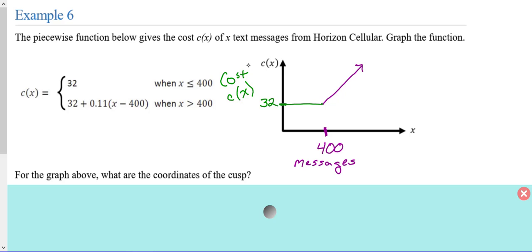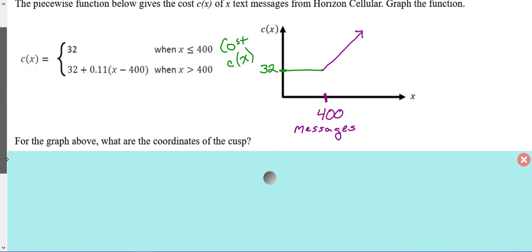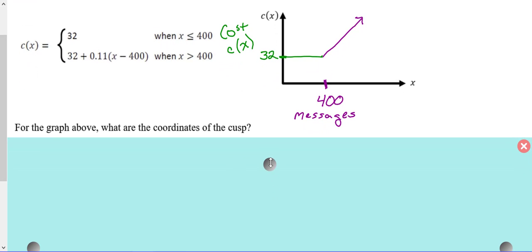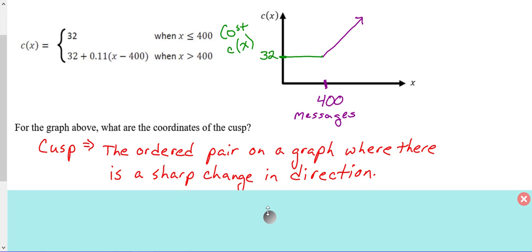For the next part of our example, they want to know what are the coordinates of the cusp. And what you need to remember is that by definition, a cusp is the ordered pair on a graph where there is a sharp change in direction.